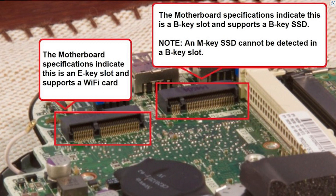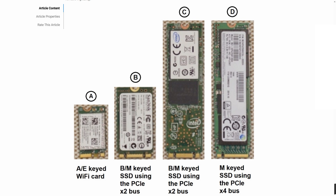There are so many key types — A, B, A+E, and so on. I searched for the differences between them and found that A+E key is used for Wi-Fi cards, B+M key is for SSDs, and there are also B+M keyed SSDs using PCIe, and finally M-keyed SSDs.